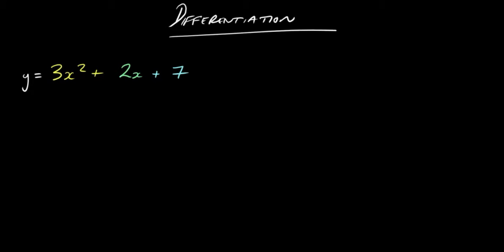Say you've got a function like y equals 3x squared plus 2x plus 7, where there's more than one x term. You just treat them all as separate ones, and you differentiate individually, and you just add or subtract them depending on the sign in between the terms.